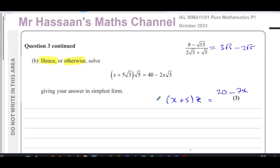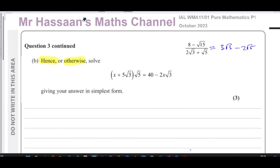Don't get confused by the square roots — this is a linear equation. The x is only to the power of one, no x squared or x cubed. It's a simple linear equation with a bracket. The approach is the same as solving something like x plus five times seven equals twenty minus three x: expand the bracket, collect x terms on one side, number terms on the other, then solve.